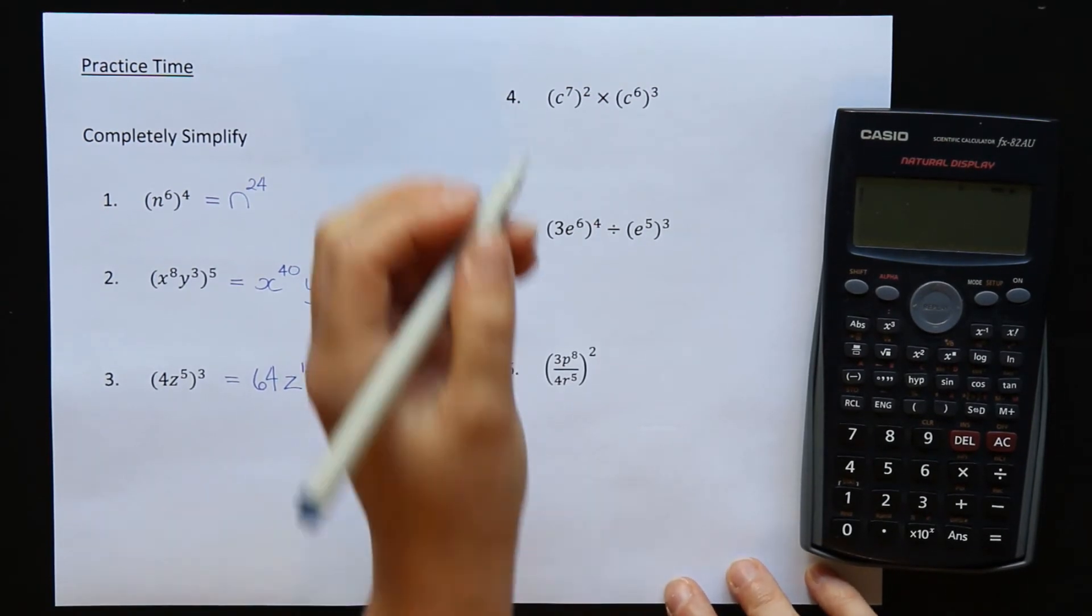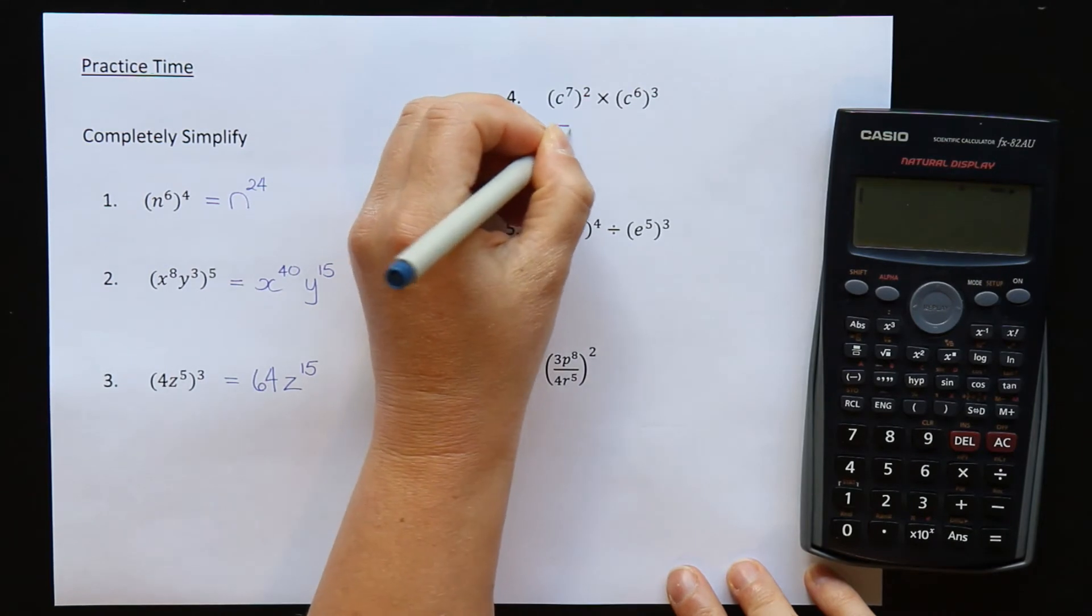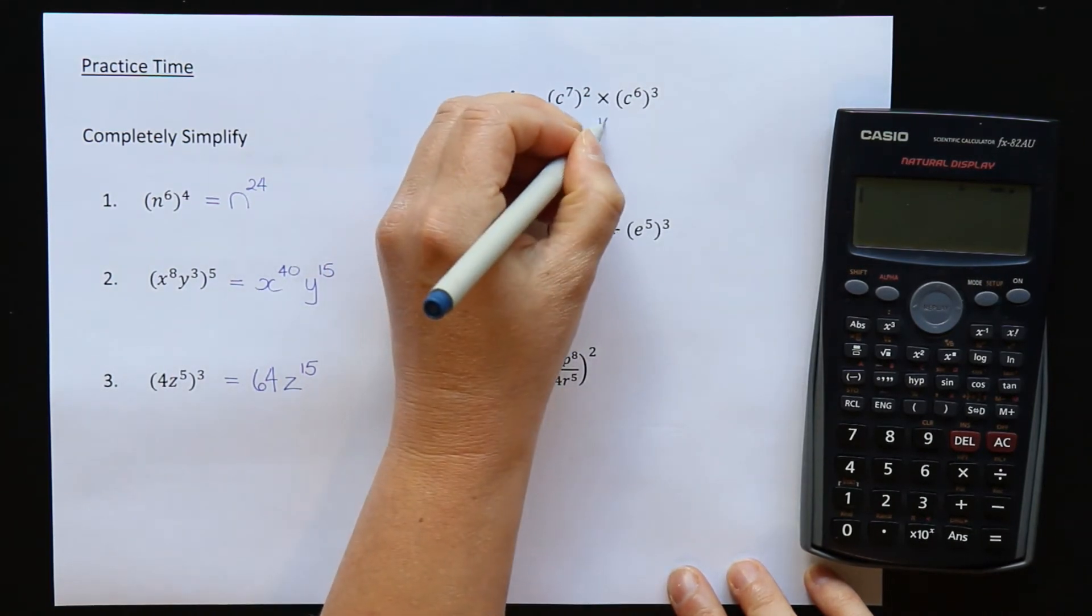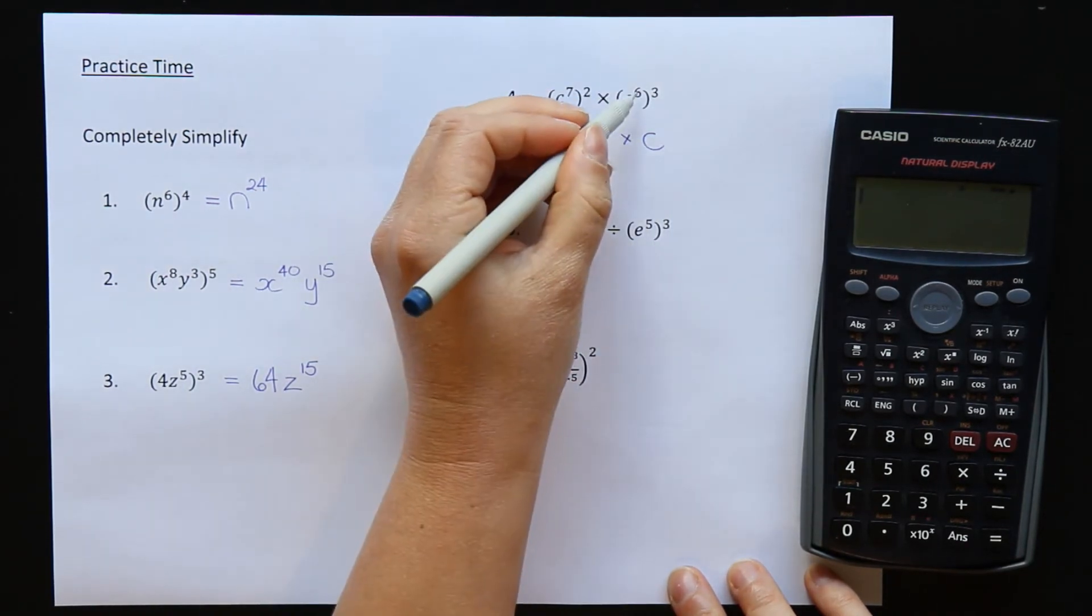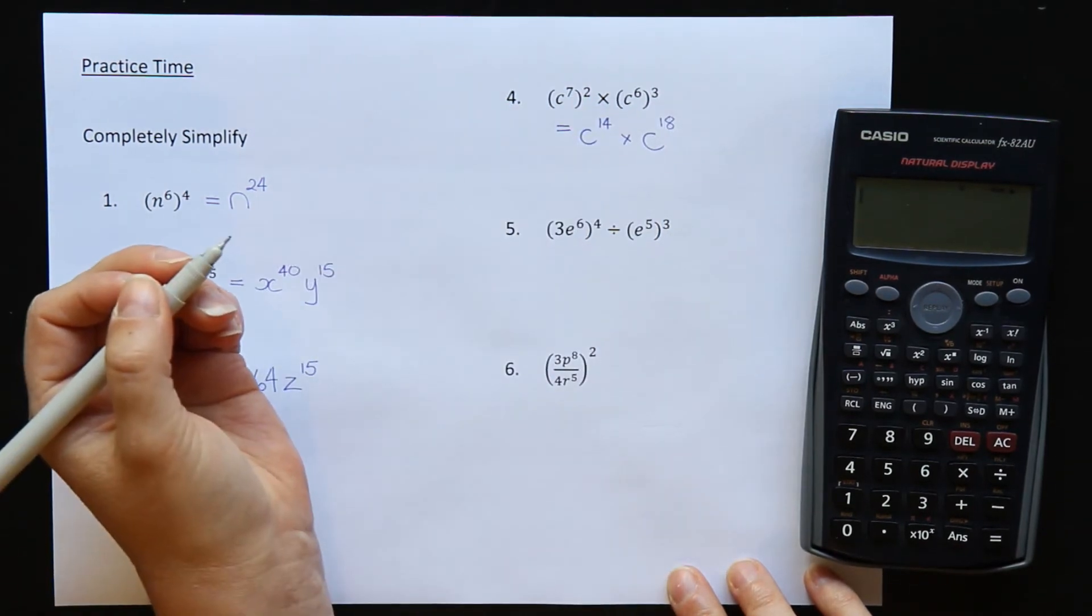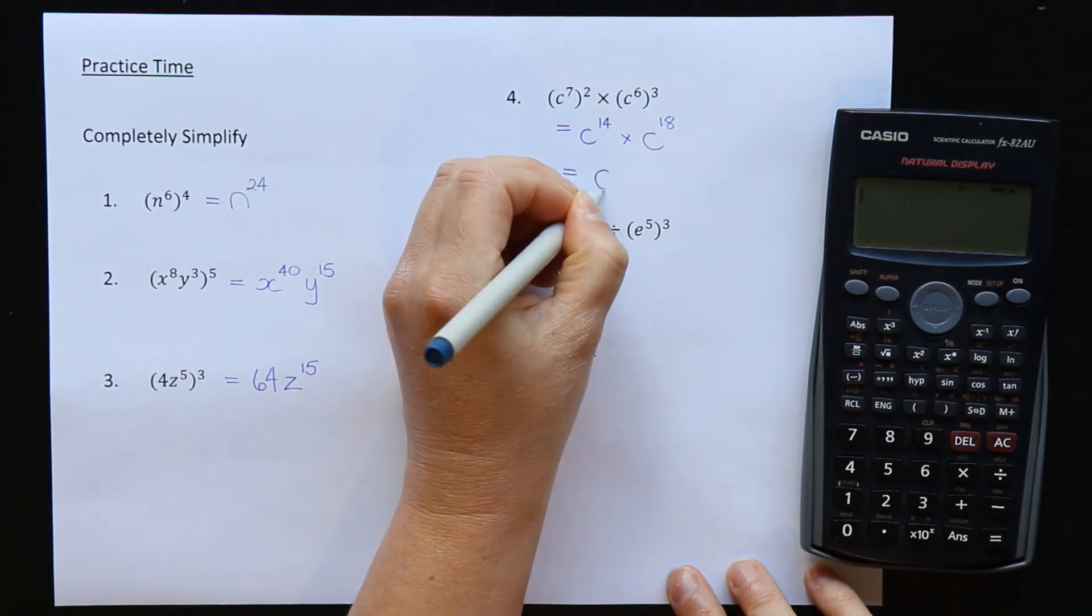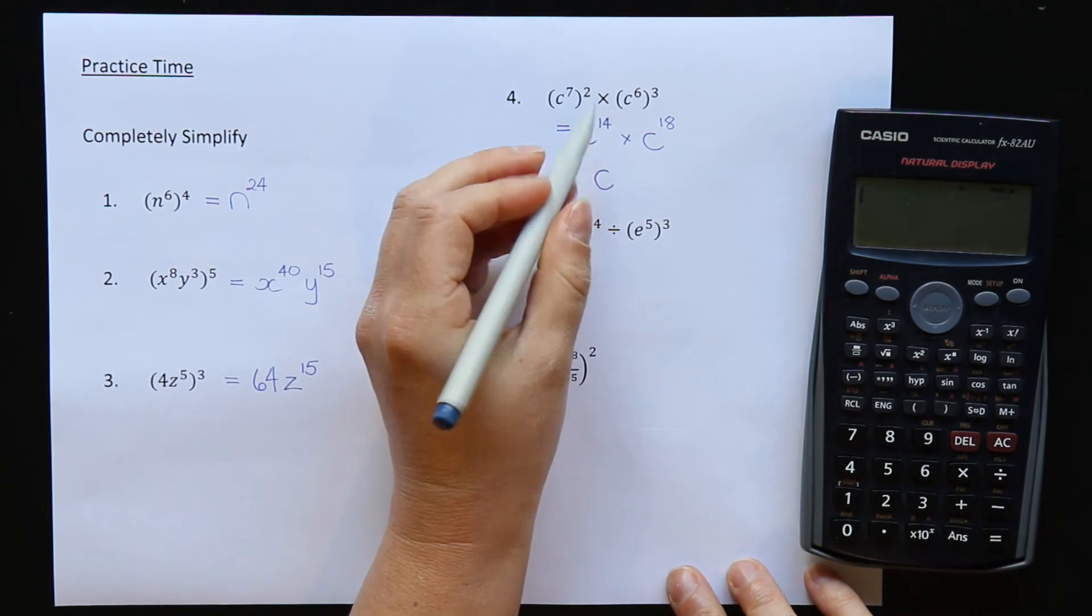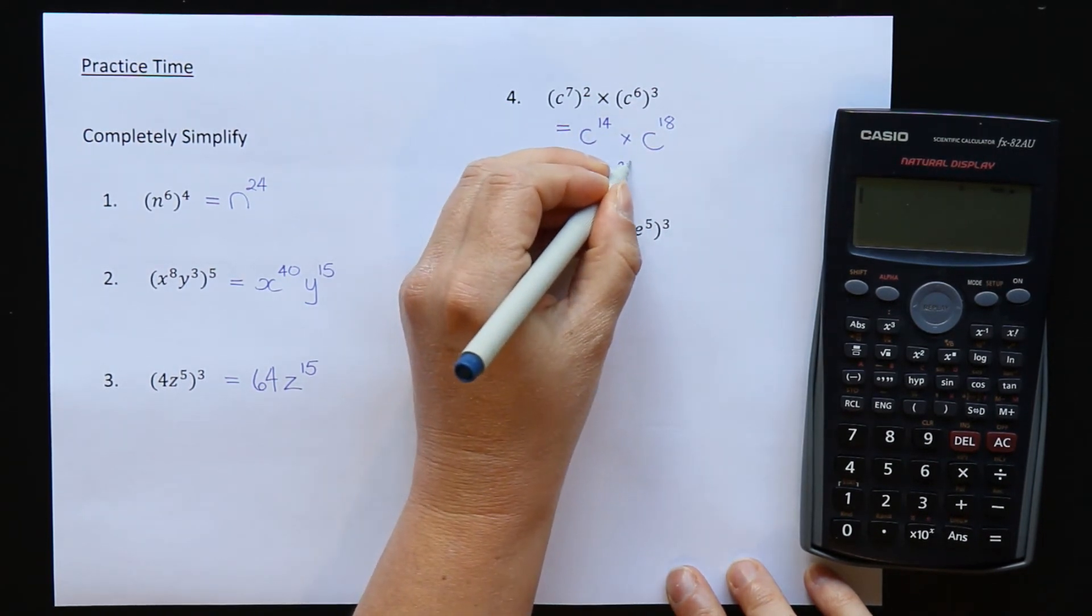Question 4, combining a few of our indices skills. First of all expand the brackets. C is the base, 7 times 2 is 14, times 5, C is the base again, 6 times 3 is 18. Then we want to multiply these expressions together so the base is the same is C and we add the powers so 14 plus 18 is 32.